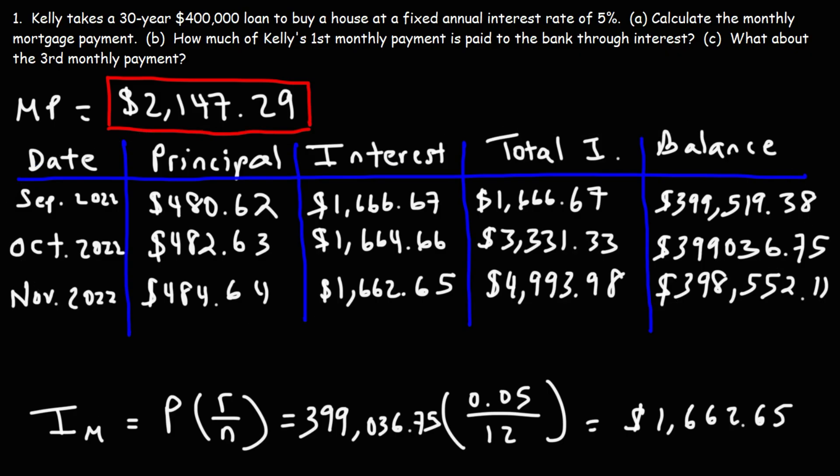Of course, you could continue the process, but you can also use an online calculator or do it in Excel. I have a video that explains how to create an amortization schedule in Excel — if you search 'amortization Excel organic chemistry tutor' in the YouTube search box, it'll show up in the results.